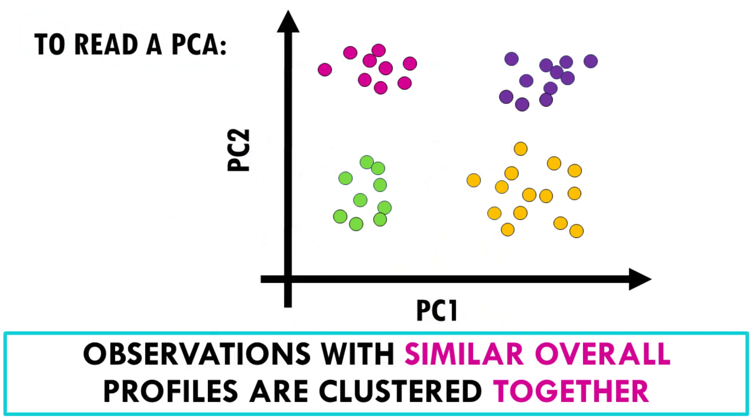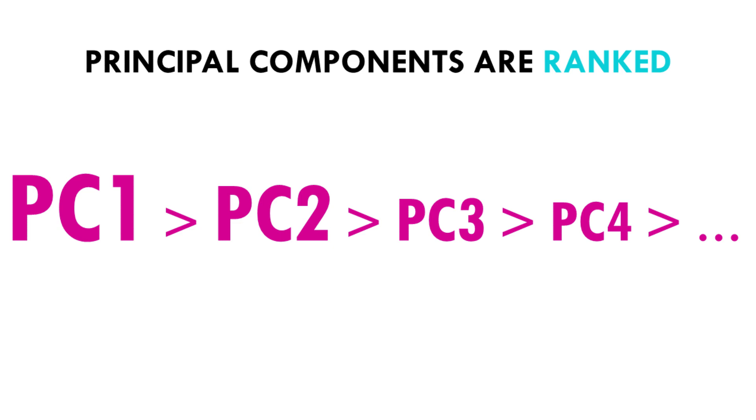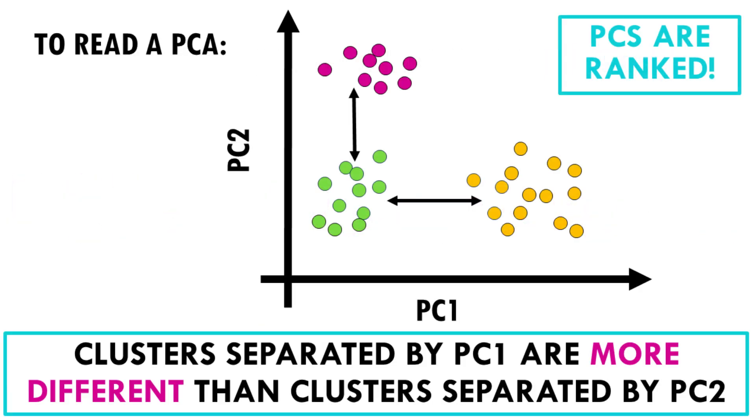PCA basically summarizes all the genes across many cells in a lower dimension by grouping genes that change in a similar way across the dataset and summarizing this information in PCs or principal components. So cells with similar values of PC1, PC2, and so on have a very similar profile, with PC1 being the most important principal component, followed by PC2, and so on.